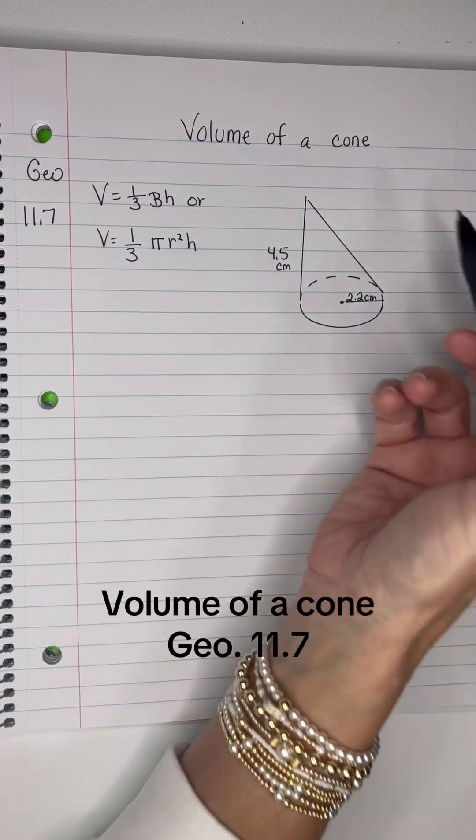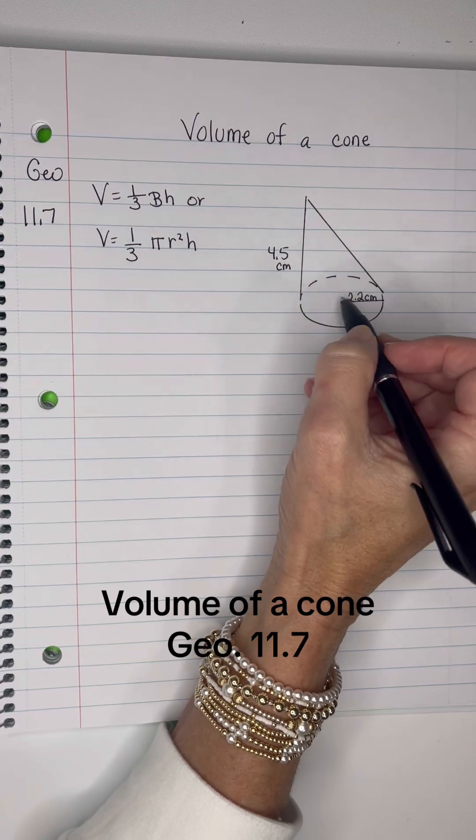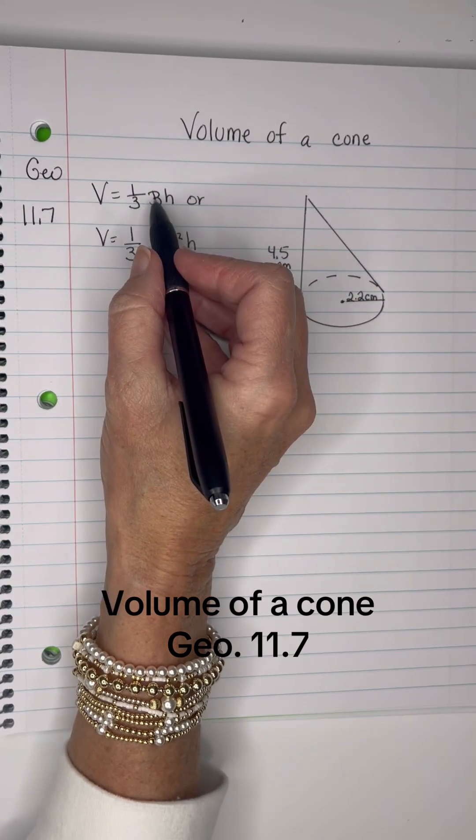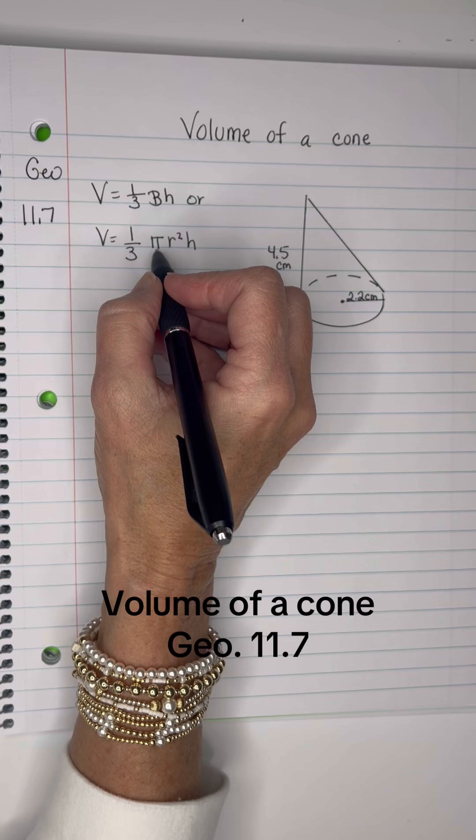In this problem, the cone looks a little bit odd, but this is the height of it—it's perpendicular with this circle. So instead of using the capital B, I could use πr² because that is the area of any circle.